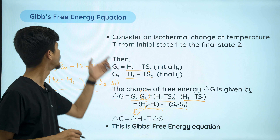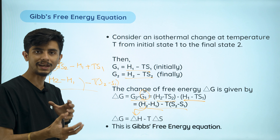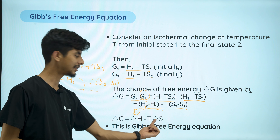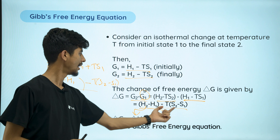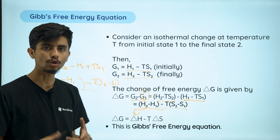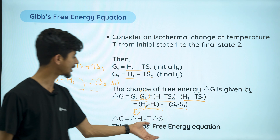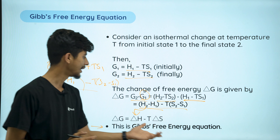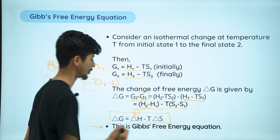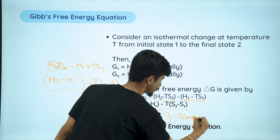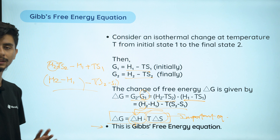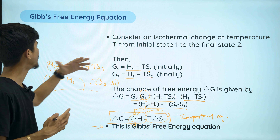So this is ΔG — Gibbs free energy change. ΔG equals the enthalpy change minus the temperature. Since the temperature is constant at T, we get ΔG = ΔH minus T times the entropy change ΔS. This is the Gibbs free energy equation — keep it at the back of your head, it is an important equation: ΔG = ΔH minus T ΔS.